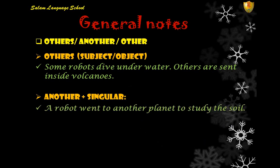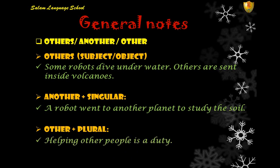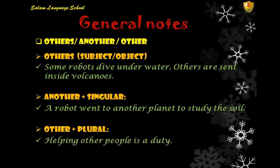The second word, 'another', is followed by a singular noun. For example: 'A robot went to another planet to study the soil.' The third word, 'other', is followed by a plural noun. For example: 'Helping other people is a duty.'